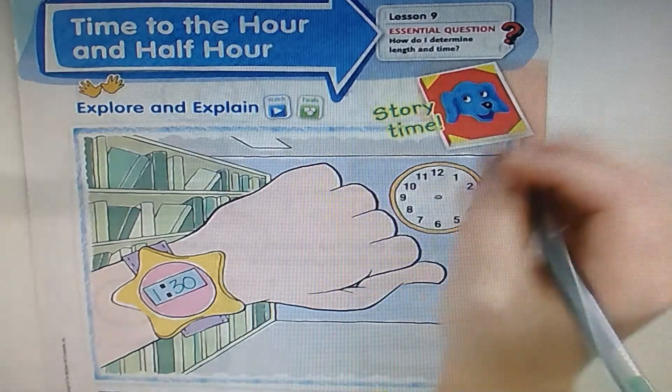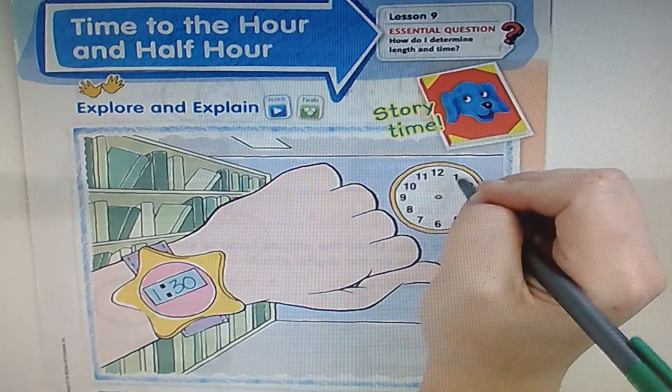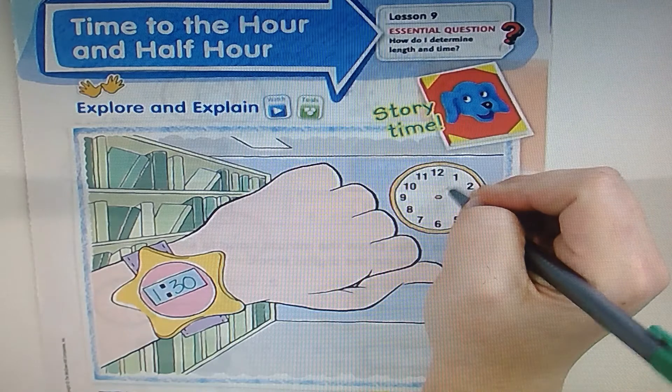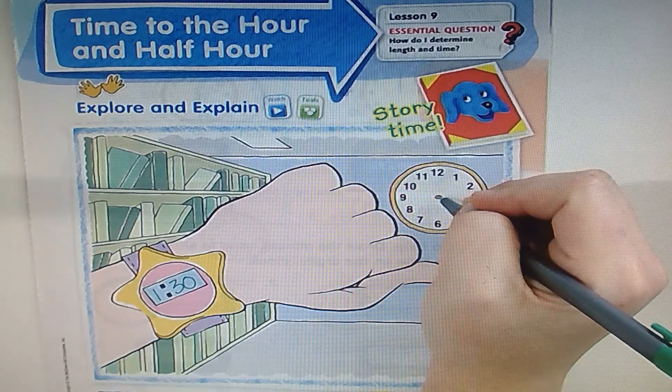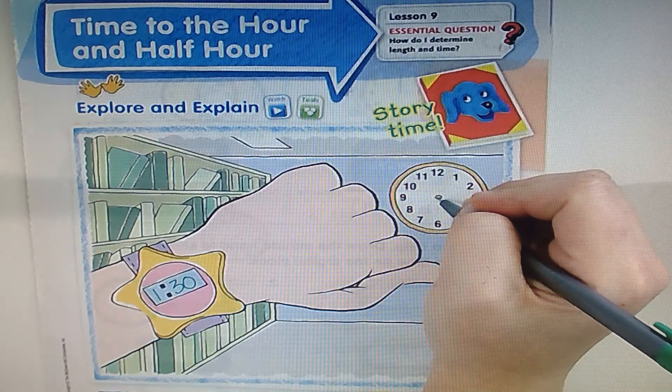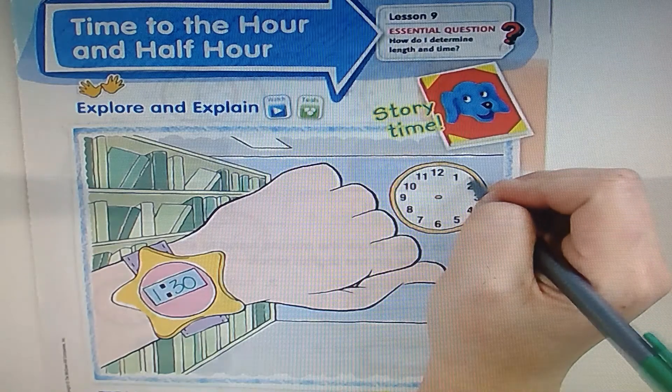On the analog clock, we do the hour hand first and we know that it's the 1 o'clock hour. But since it's 1:30, we know it's not going to point directly at the 1 o'clock. It's going to be halfway past it, so halfway to the 2.